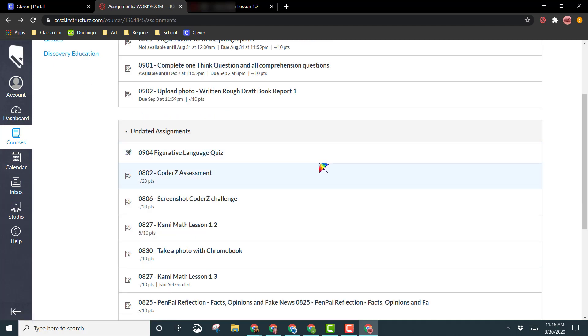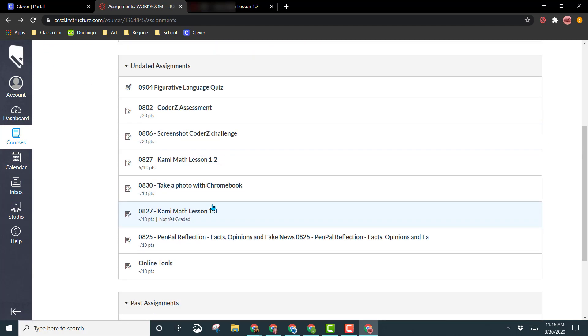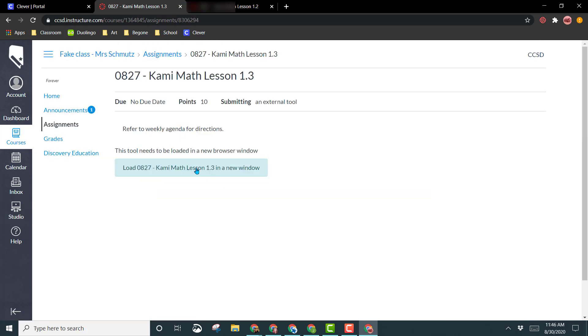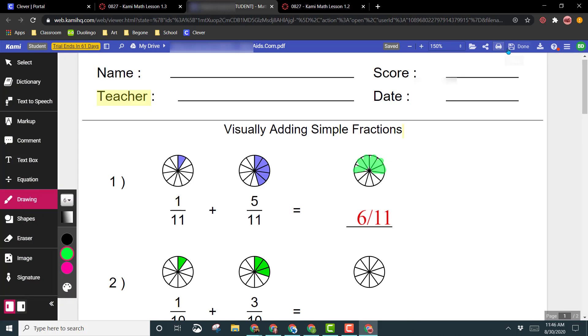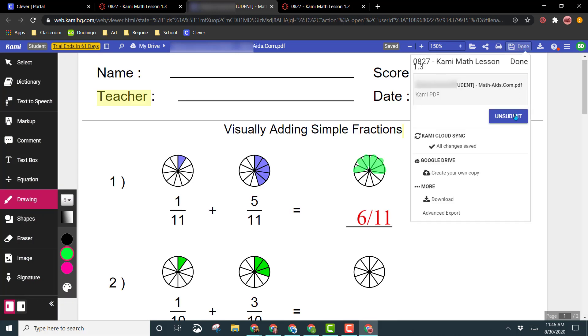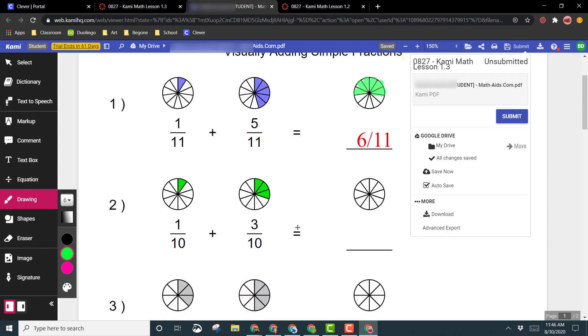If you needed to work on that assignment again, you would come to assignments, find it in the list, left click on it. Go ahead and open it again in a new window. You would need to come up to that submit button that says done now. Click on done. Click unsubmit. So now you're unsubmitting it. You can make any additional changes that you need to make to this. Do your next part of your assignment, and when you're done, click submit again so your teacher knows that you're ready to regrade it.